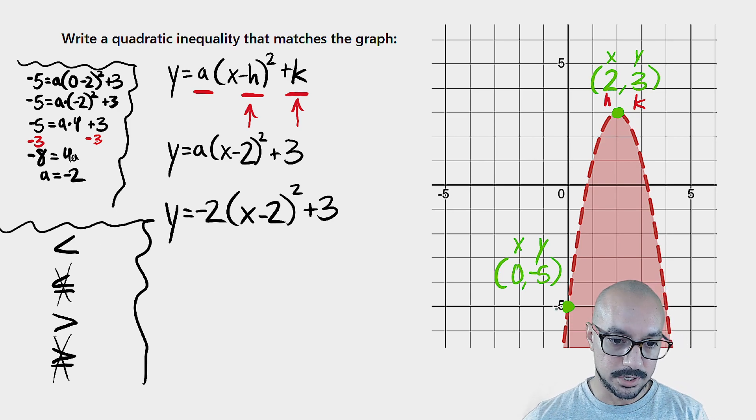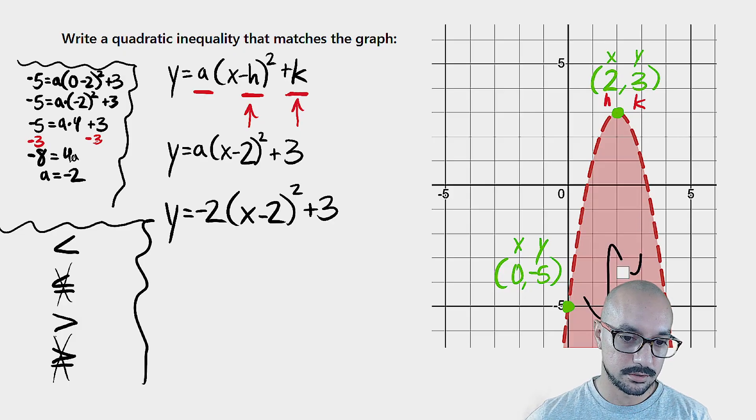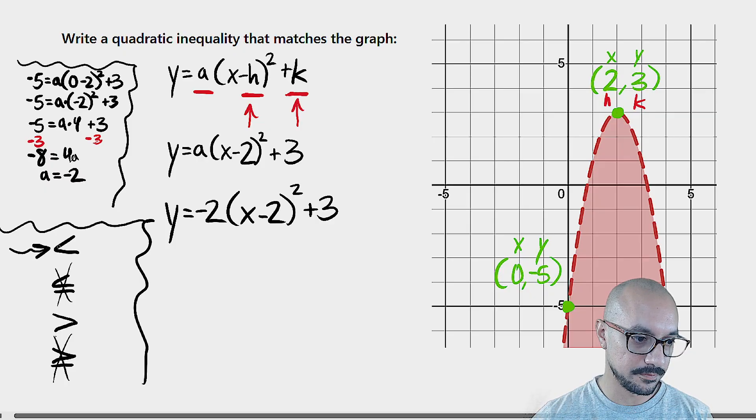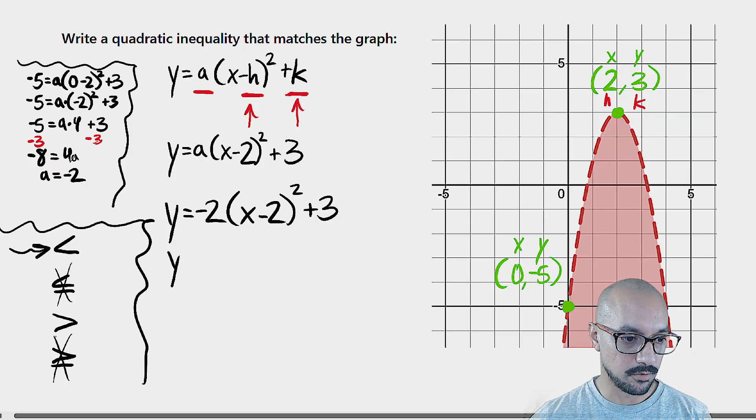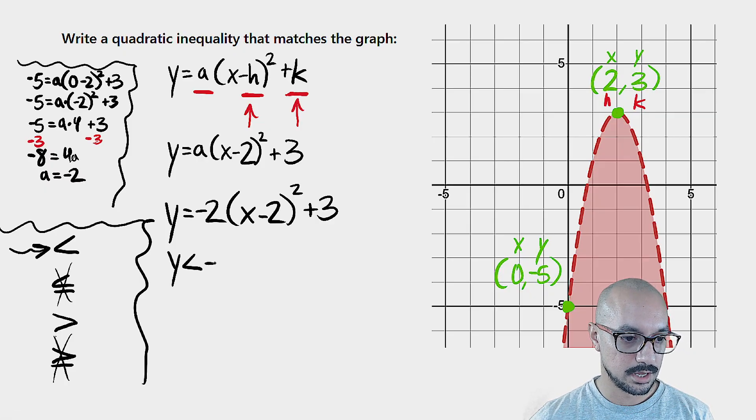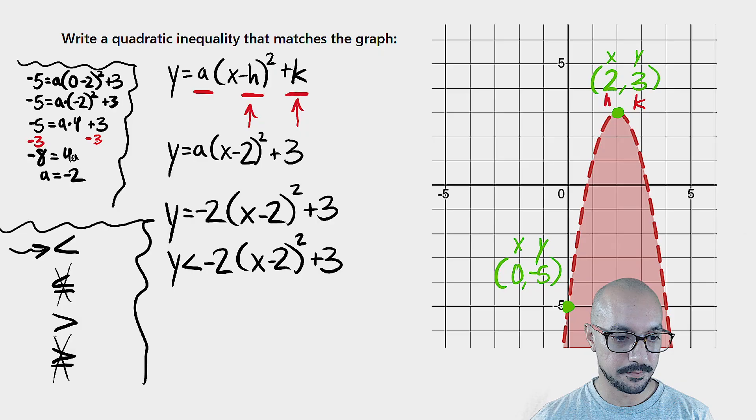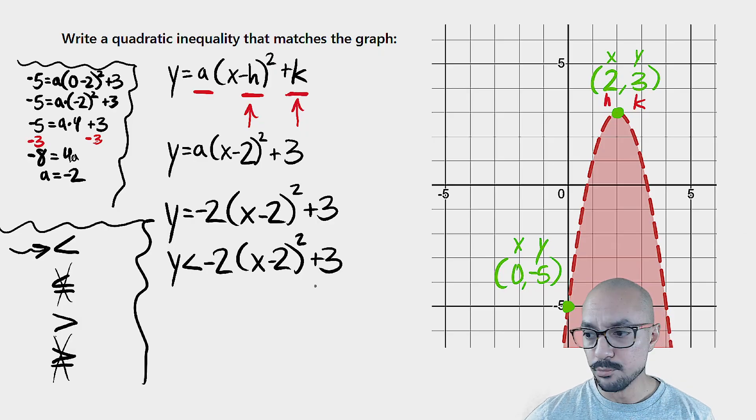We are being represented by all the values that are less than our boundary line. I can tell because we shade it underneath the parabola. So let me go ahead and I'm going to assume it's the less than sign. But we could set up y is less than negative two times the quantity x minus two squared plus three. I'm pretty sure this is correct.